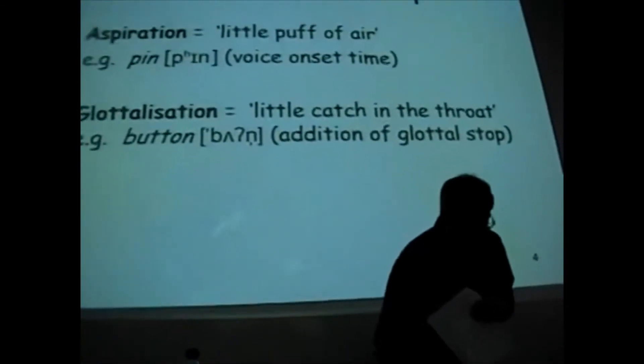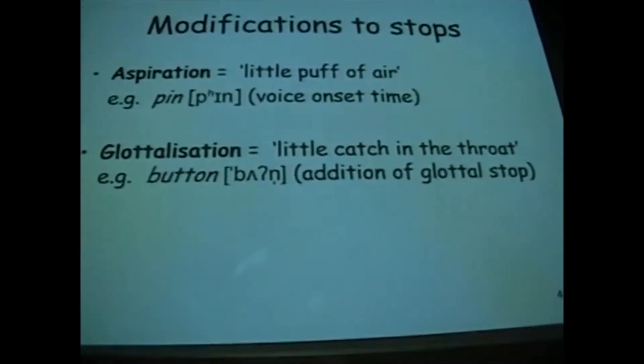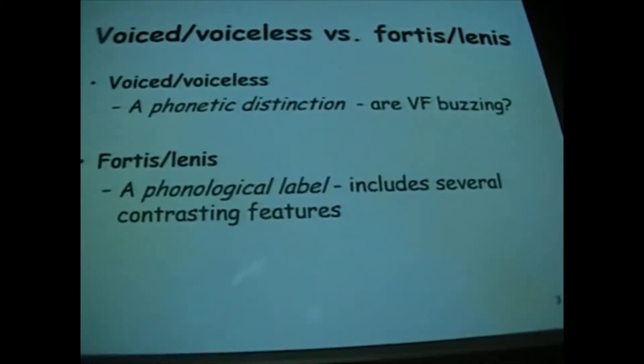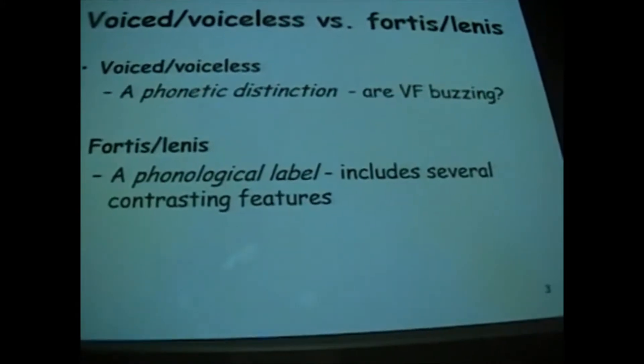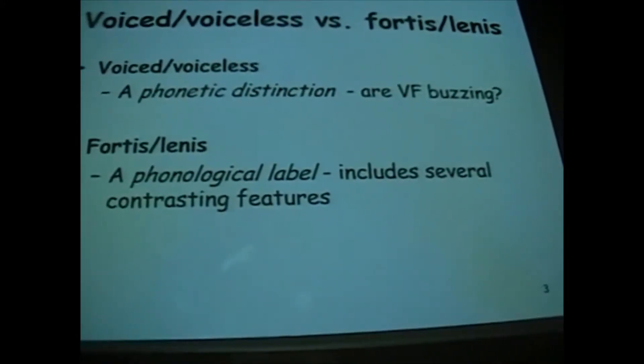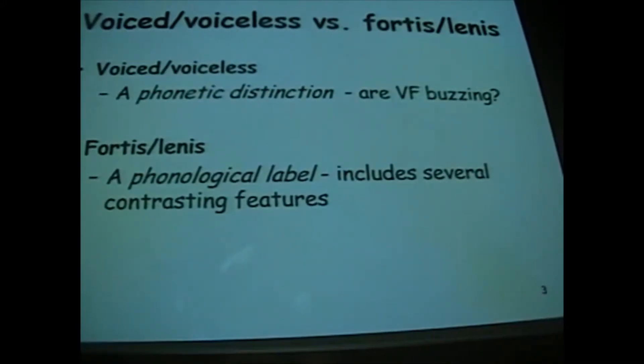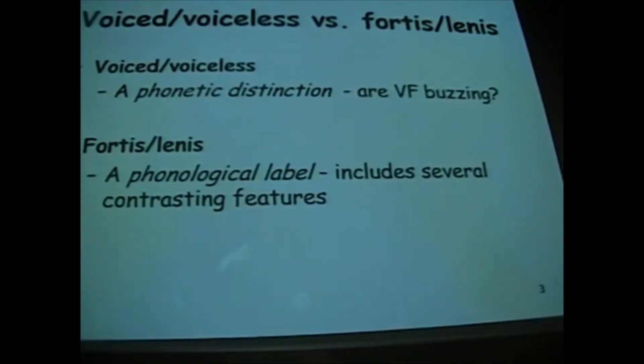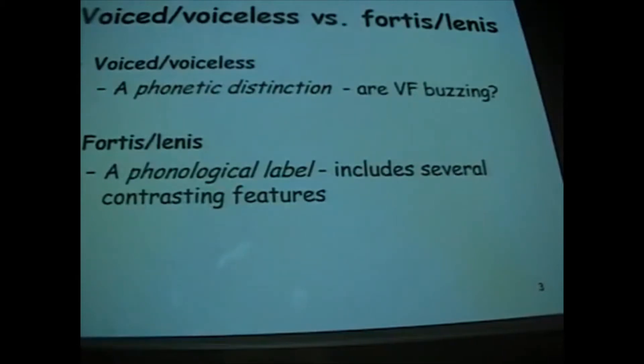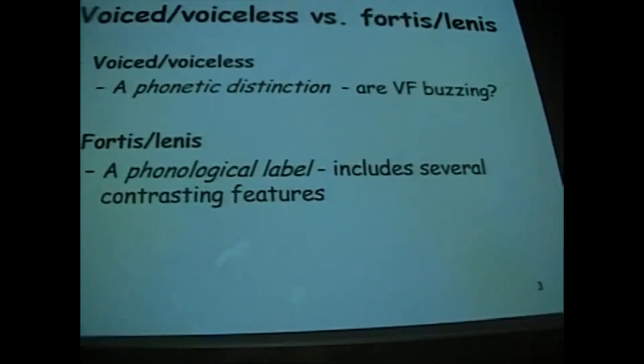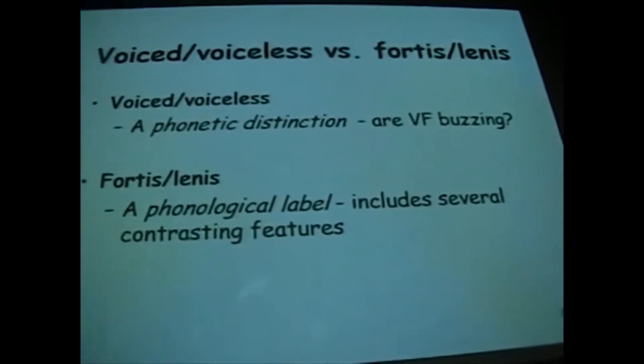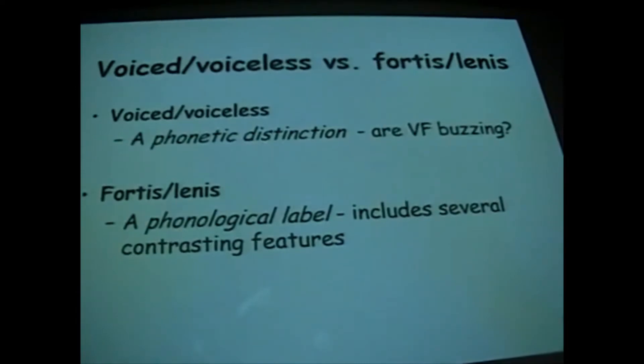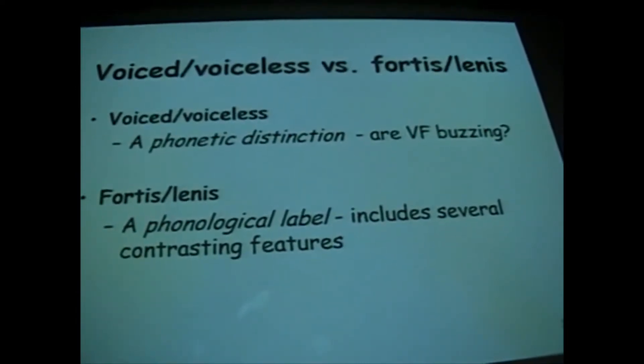What, in fact, do we mean by terms like fortis lenis? Fortis lenis is a term which we get from Latin. Fortis means strong, lenis means soft or weak. And the various features which are contained within it, you can see summarized on your handout. As I said, I won't talk about these in great detail now, because we'll come back to it when we talk about English consonants, an overview of English consonants in my next lecture.